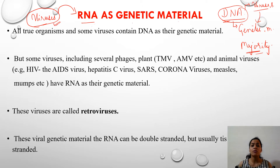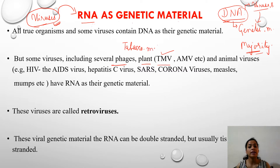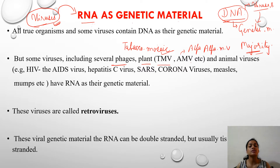Today we will be talking about these kinds of viruses which contain RNA as their genetic material. Examples include some phages, plant viruses like TMV — tobacco mosaic virus — and AMV, alfalfa mosaic virus. These are examples of plant viruses which contain RNA as the genetic material.